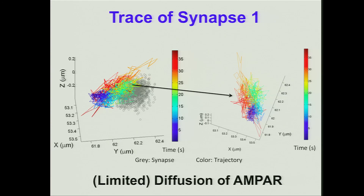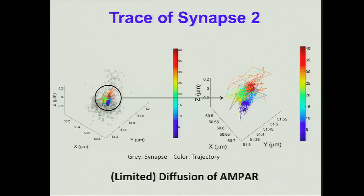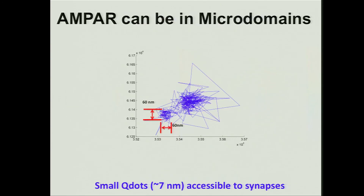The AMPA receptors are diffusing in only part of the synapse. They're color-coded — blue is early time points and red is latest — so clearly what looks like one subdomain is in fact many of them. Here's yet another example, and yet a third one. Notice that sometimes it's very clearly a subdomain and then another subdomain; other times it sort of moves along.